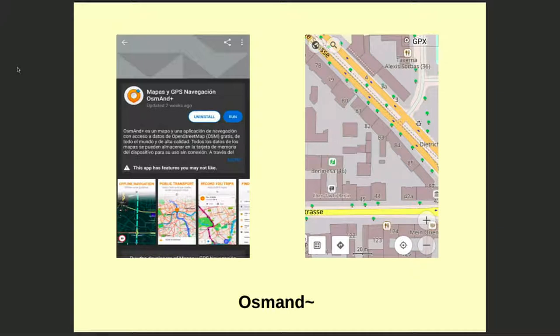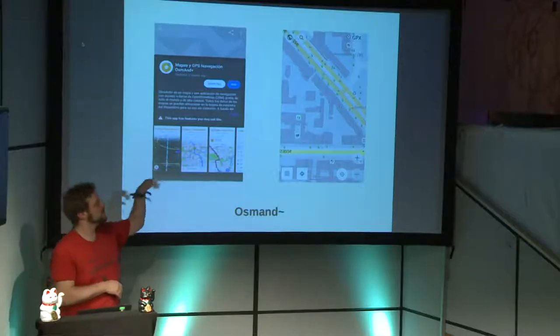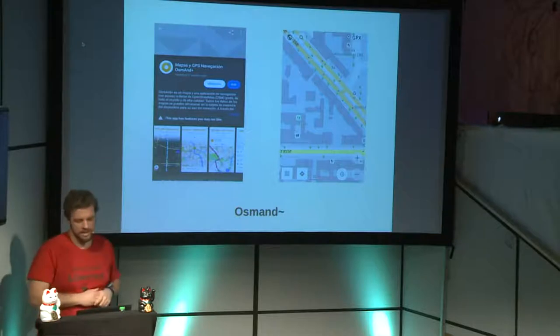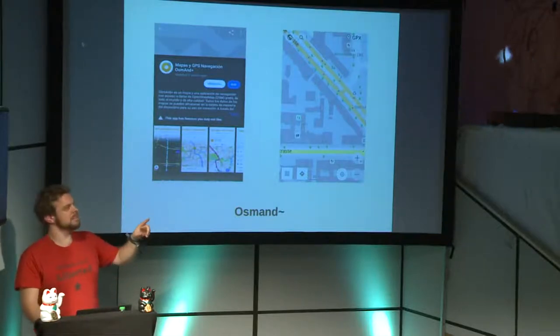I travel a lot, so navigation software is essential for me. OsmAnd is just perfect — it's like a Swiss army knife for navigation. It's based on OpenStreetMap, which is like the Wikipedia of maps: built by user contributions and extremely detail-rich, showing every tree, waste bin, and more. Much more detailed than Google Maps.